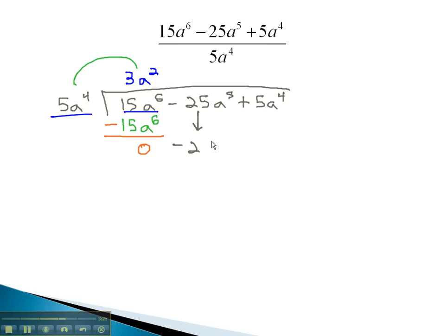Bringing down the next term will be 25a to the 5th, which we can now repeat by dividing by 5a to the 4th. This will reduce to negative 5a.